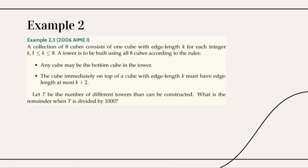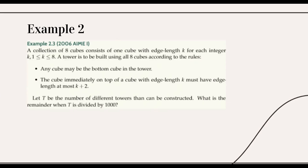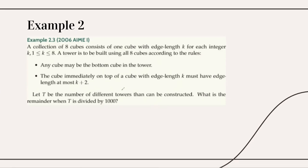Let's see another example, this time from the 2006 AMU. We have eight cubes with side lengths k for each integer 1 through 8. We're trying to build a tower using all the cubes according to some conditions. These conditions make casework super difficult. Any cube may be on the bottom of the tower, and the cube immediately on top of a cube with edge length k must have edge length at most k+2.